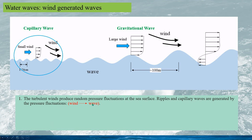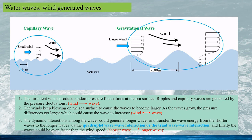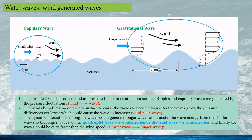Here there is wind and wave interaction, with energy transferred from wind to wave. The winds keep blowing on the sea surface, causing the waves to become larger. As the waves grow, the pressure differences get larger, which causes the waves to increase further. This is the wind-wave interaction, but the main energy flux is still from wind to wave. The dynamic interaction among waves can generate longer waves and transfer energy from shorter waves to longer waves via quadruple or triad wave-wave interaction.